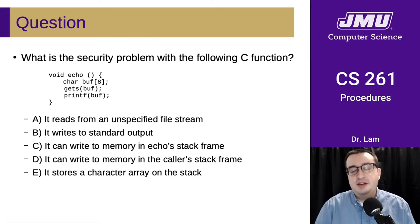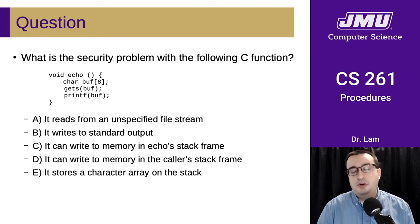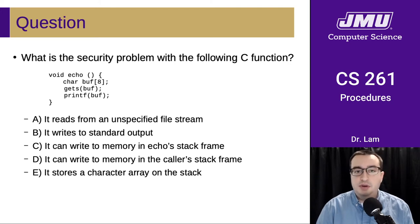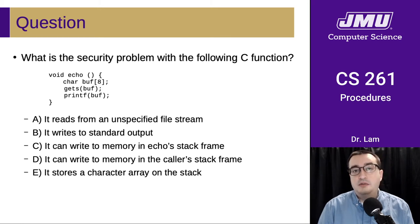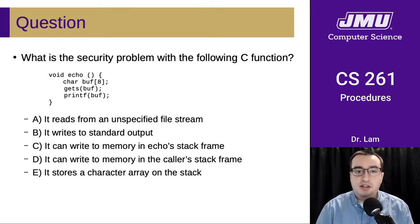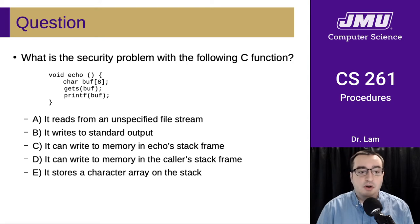Take a minute and think about this now that we know how stack frames work in x86. Here's a C function that will get compiled down to x86. We allocate an eight character buffer and read some input into that buffer using a function that we know is unsafe. This is one of those functions you're not allowed to use in this course - the gets function. But suppose we were to use it just to illustrate what can go wrong.